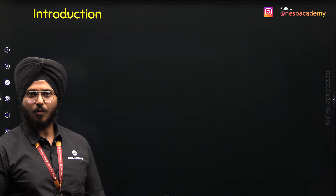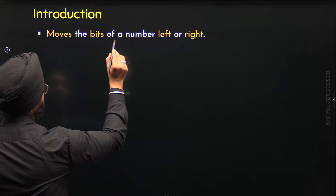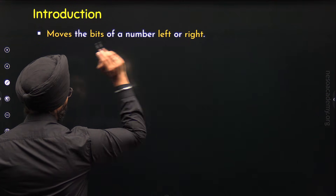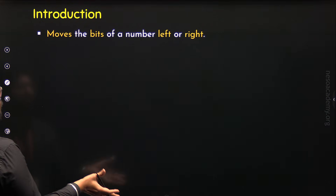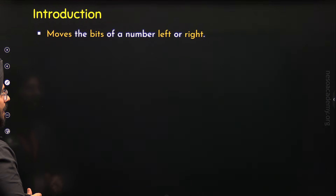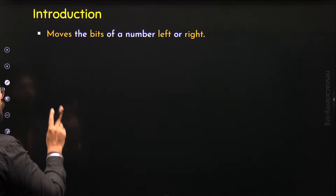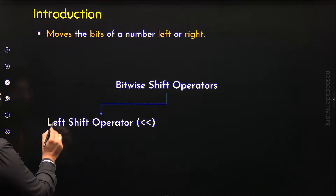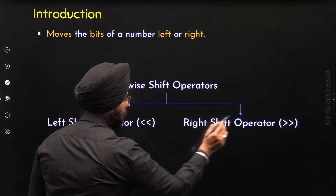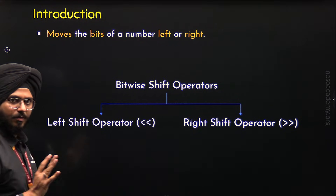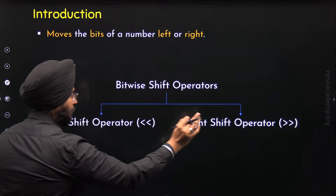Bitwise shift operators are operators that allow us to move the bits of a specific binary number left or right. There are two types: the bitwise left shift operator, represented by two less-than symbols, and the bitwise right shift operator, represented by two greater-than symbols. We will discuss these two types properly in this lecture.